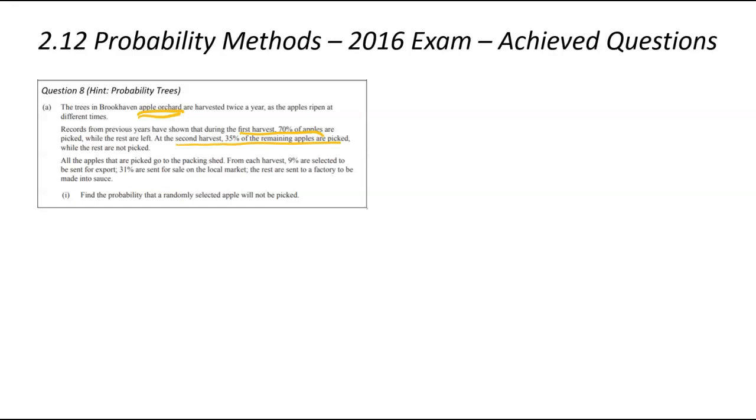All the apples picked could go to the packing shed, 9% of them might be sent for export, some of them might go to the local market, and the rest are sent to the factory. We've been asked, what is the probability that an apple will not be picked? The good thing about this question is that bottom information about where the apple goes after it's picked is not relevant, because we're only interested in if it is not picked.